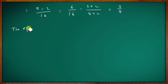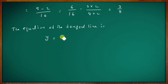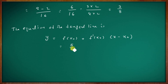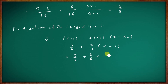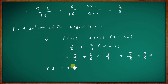The equation of the tangent line is y = f(x₀) + f'(x₀)·(x − x₀). Substituting: f(x₀) = 5/4, f'(x₀) = 3/8, x₀ = 1. This gives y = 5/4 + (3/8)(x − 1), which simplifies to 8y = 7 + 3x.